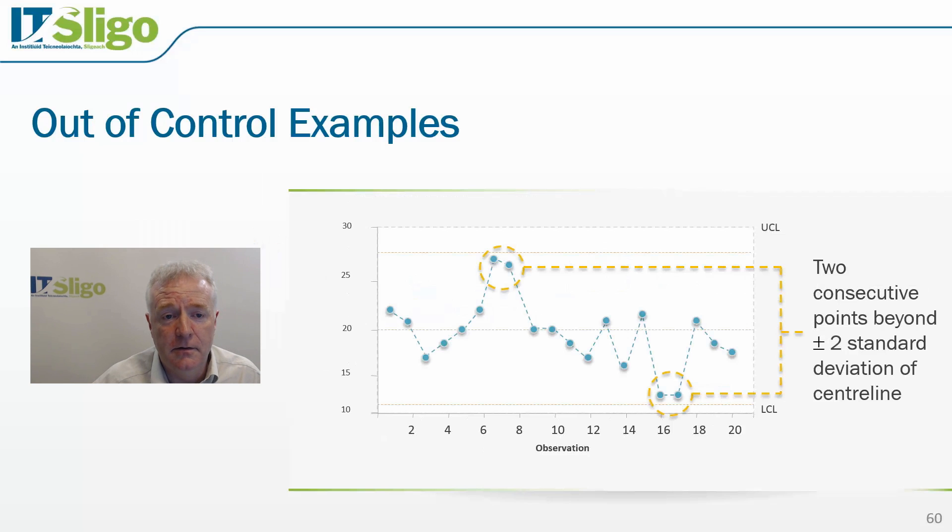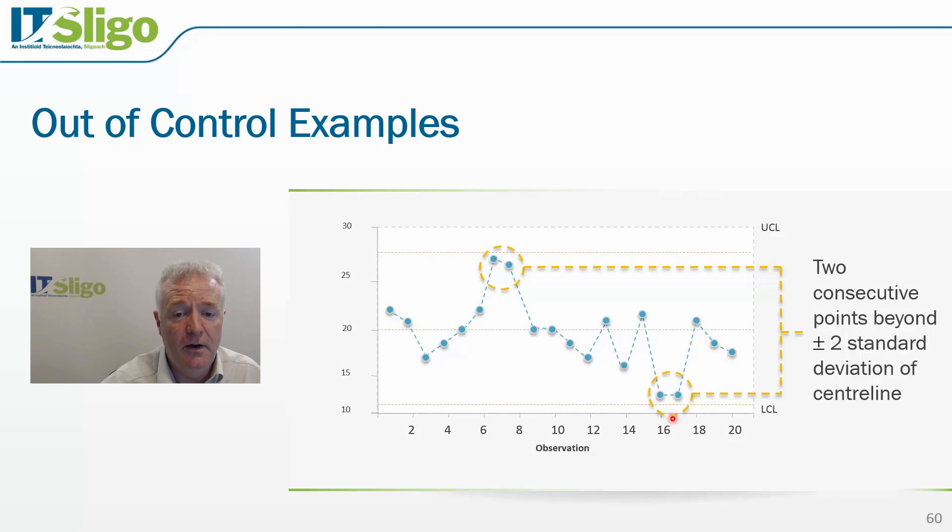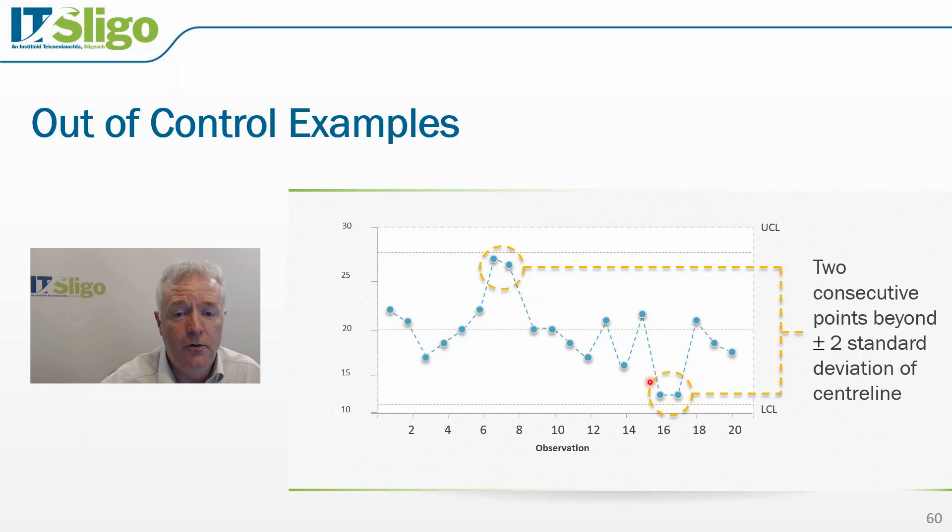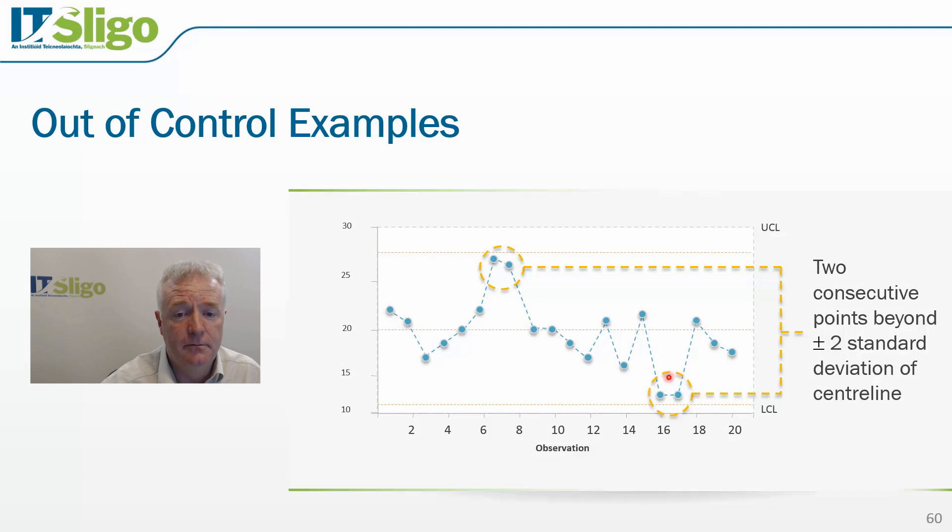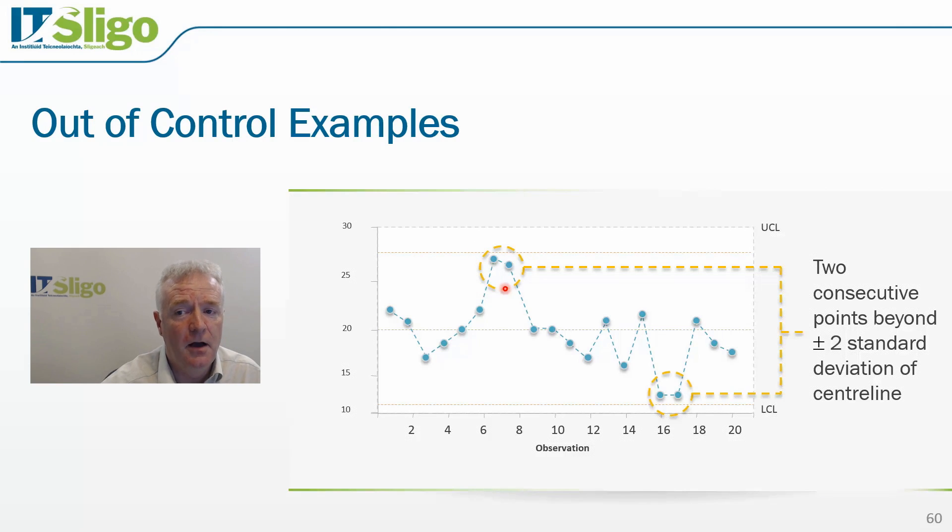Here we see an example of another out of control condition. The probability of two points lying beyond two standard deviations was very low. In actual fact, we only expected 2.5% of all measurements to fall in this region, and another 2.5% to fall in the region here. So when it occurs, we begin to suspect that there is something wrong with our process, and we investigate.